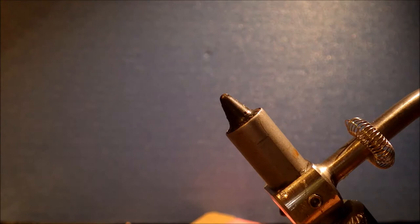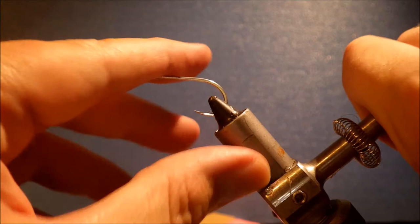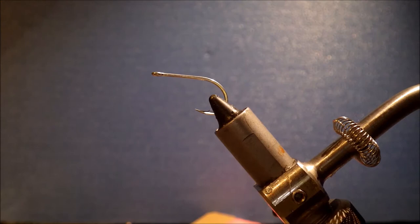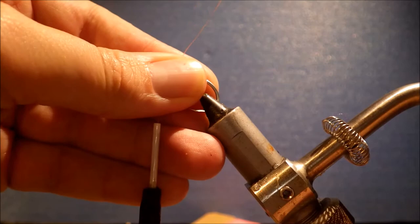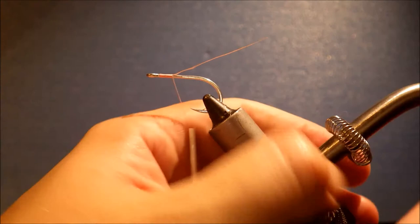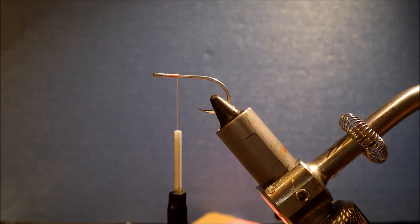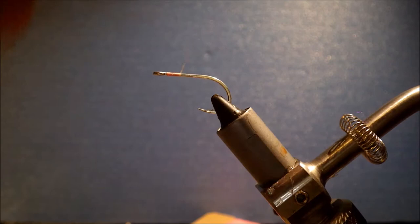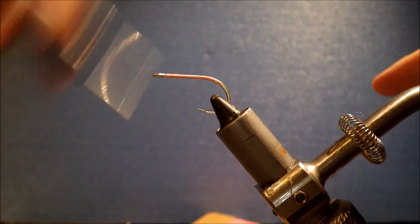So I'm going to start with a size 2 Kamakatsu S10S4H in the vise. You can use whatever hook you like really. Usually if you check any of the books, they're tied in like Mustards or Mustard TMC codes. This S10S4H is very similar to an SL12 for any of you who like Kamakatsus. I do.